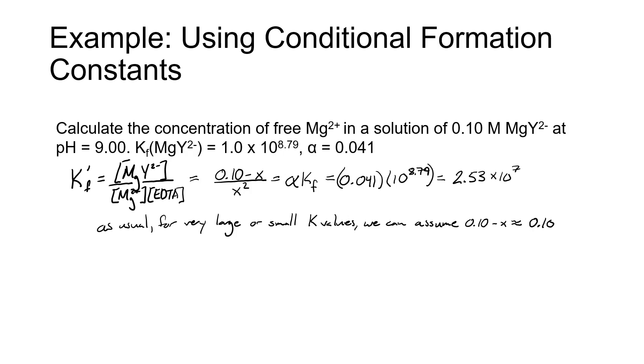Our conditional equilibrium constant, then, is what we use to calculate the free magnesium 2 plus concentration, and our conditional formation constant is equal to the magnesium Y2 minus complex concentration divided by the magnesium concentration times the total EDTA concentration.